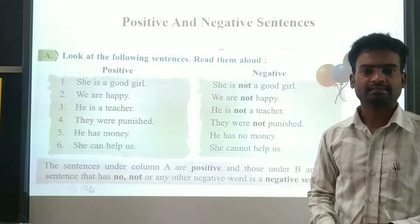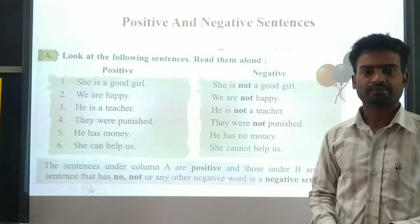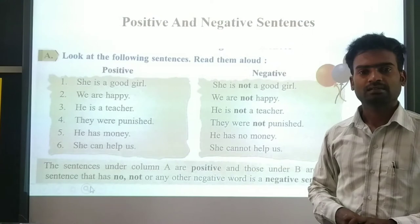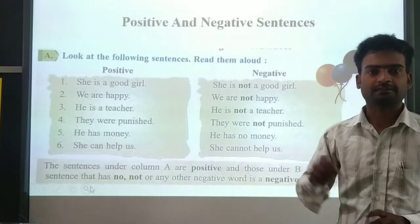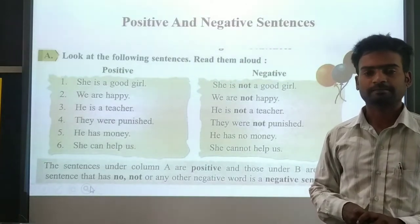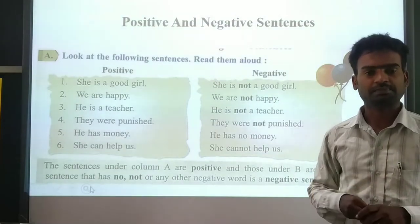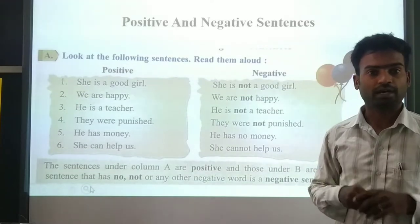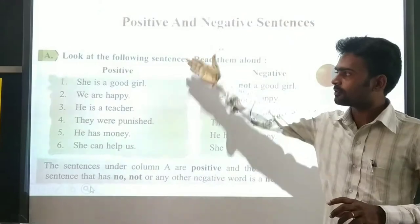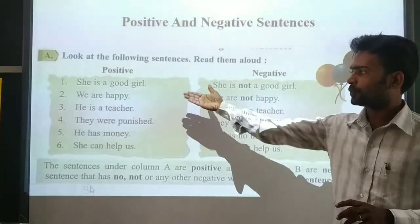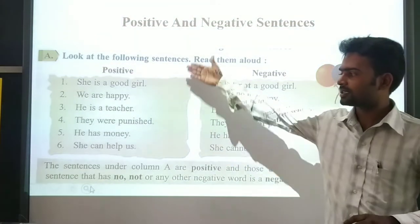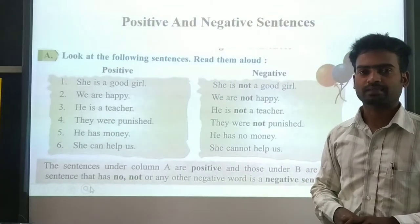There are two types of sentences we can make: positive and negative sentences. Here are some examples. Positive statements: 'She is a good girl' - whenever we speak about a person in a positive way, it becomes a positive sentence. 'I am a good boy' is a positive sentence. He's a teacher, they were punished, he has money, she can help us - all these are positive sentences.